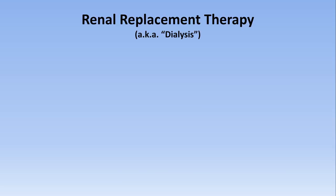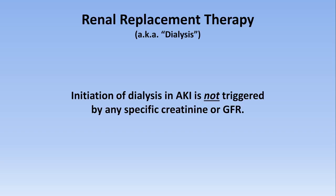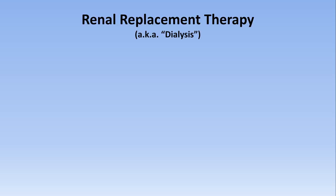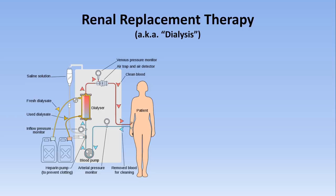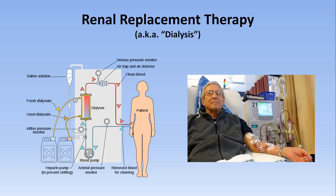Importantly, initiation of dialysis in AKI is not triggered by any specific creatinine or GFR level — patients with a creatinine of 10 mg/dL may not need dialysis, while others require it with a creatinine of 4. To give a basic idea of how dialysis works: it takes blood from the patient, runs it through a dialyzer containing a semi-permeable membrane where the patient's blood flows along one side and an exogenous fluid of water and electrolytes called dialysate flows along the other. Water, electrolytes, and small molecules like urea can pass through the membrane while proteins and blood cells cannot. The used dialysate is discarded, while the filtered clean blood is returned to the body.